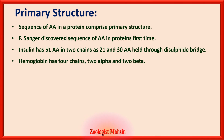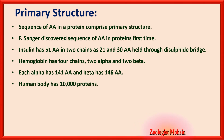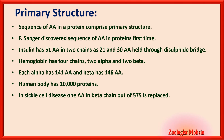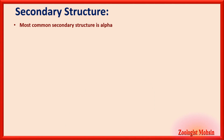Hemoglobin has four chains — two alpha and two beta. Each alpha chain has 141 amino acids and each beta has 146, so multiply 141 by 2 and 146 by 2, then add for the total. The human body has approximately 10,000 proteins. In sickle cell disease, one amino acid in the beta chain out of 575 is replaced: glutamic acid is replaced by valine. This single replacement changes the whole shape of red blood cells due to the altered hemoglobin.